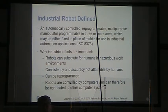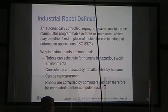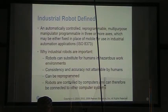Robot actually comes from the Czech word for slave and first really appeared in a play in the 1920s. An industrial robot is an automatically controlled, reprogrammable, multi-purpose manipulator programmable in three or more axes, which may be either fixed in place or for mobile use in an industrial automation application.